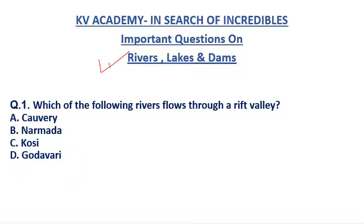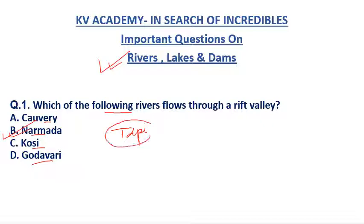Question 1: Which of the following rivers flows through a rift valley? Options: (a) Kaveri, (b) Narmada, (c) Koshi, (d) Godavari. The correct answer is option B — Narmada. Along with Narmada, the second river that flows through a rift valley is Tapi. You have to remember Tapi as well, because sometimes Tapi is also given in the options.